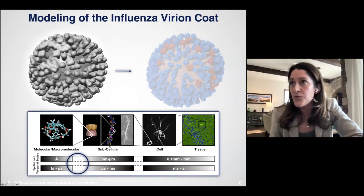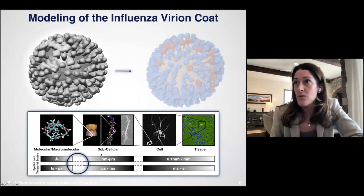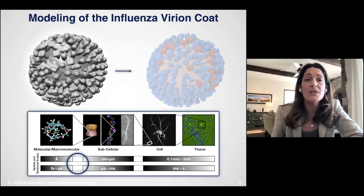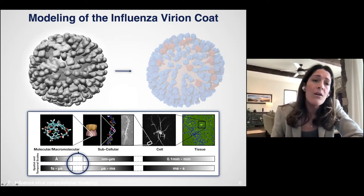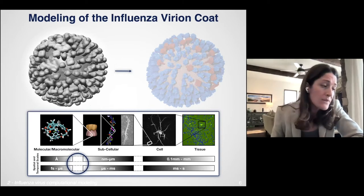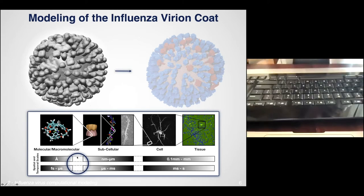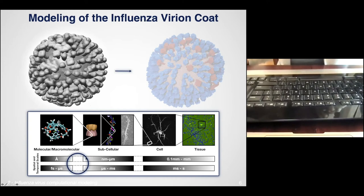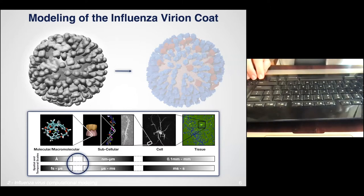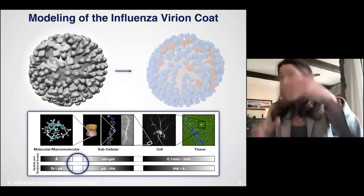There are opportunities for physics-based models particularly where you have what I call capability gaps experimentally. Using computational methods to augment and extend where we can go with experiment — there are resolution gaps with experimental technologies, and just as experimental method developers are constantly trying to bridge these gaps, we can do the same with computational methods. There's a lot to do using various types of physics across different scales, going all the way from angstrom resolution to tissue scale.